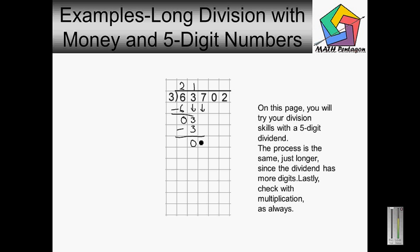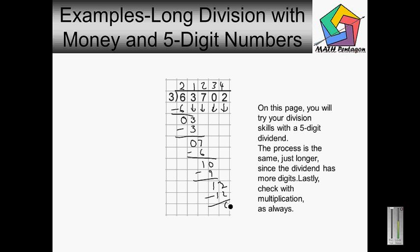Bring down the seven. Three goes into seven two times. Seven minus six is one. Bring down the zero. Three goes into ten three times. Three times three is nine. Ten minus nine is going to give us one. Bring down the two. Three goes into twelve four times. Three times four is twelve. Twelve minus twelve is zero.